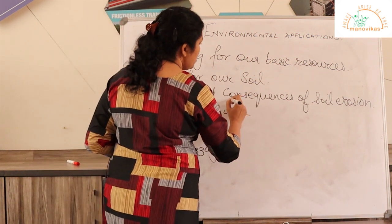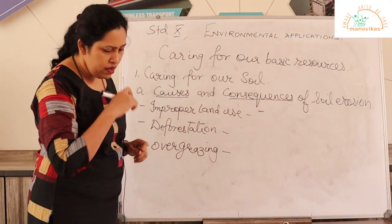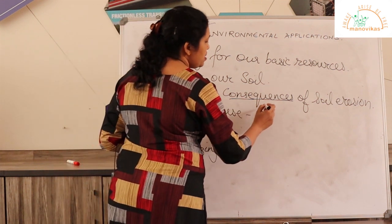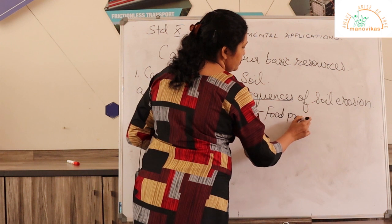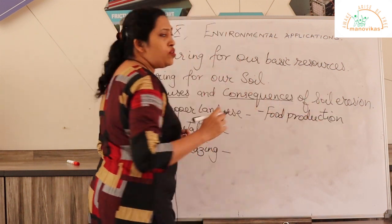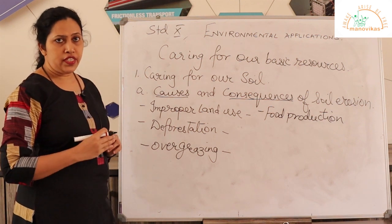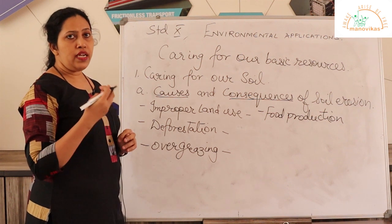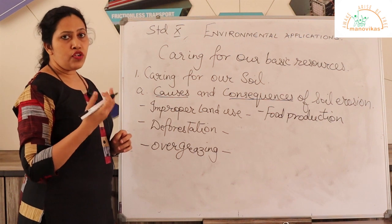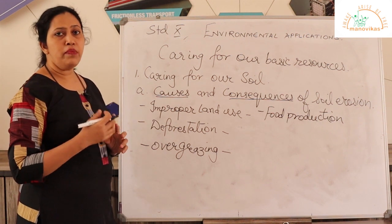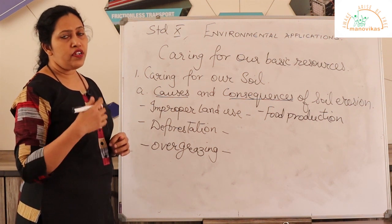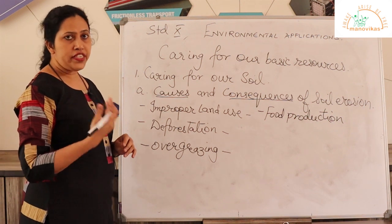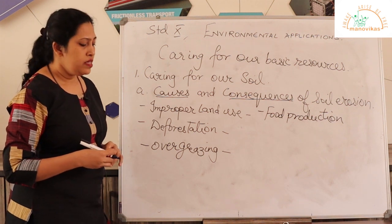Now we are doing the consequences. The first consequence is the effect of soil erosion on food production. Due to soil erosion, the topmost fertile soil is lost and carried away, so farmers have to use more fertilizers. In the long run, crops will grow for a little time but eventually the land becomes infertile. Food production decreases because farmers have to spend more money on fertilizers.